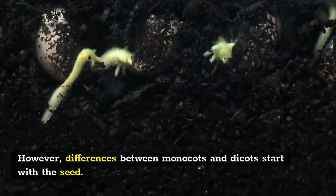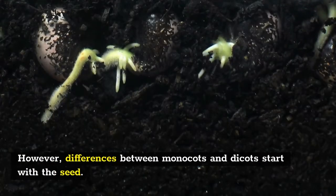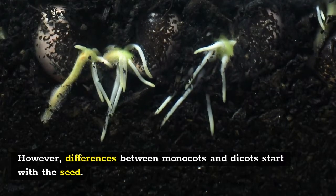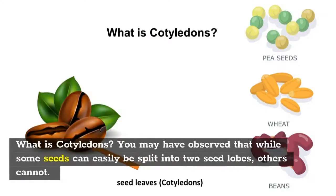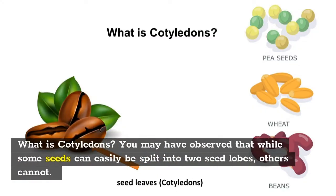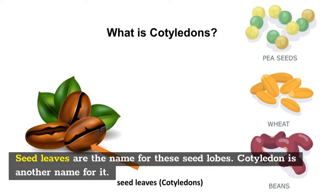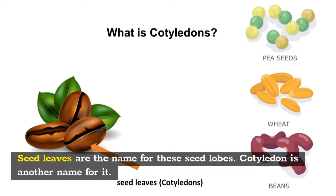However, differences between monocots and dicots start with the seed. What is cotyledon? You may have observed that while some seeds can easily be split into two seed lobes, others cannot. Seed leaves are the name for these seed lobes. Cotyledon is another name for it.